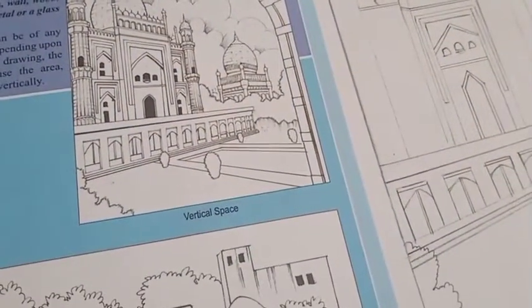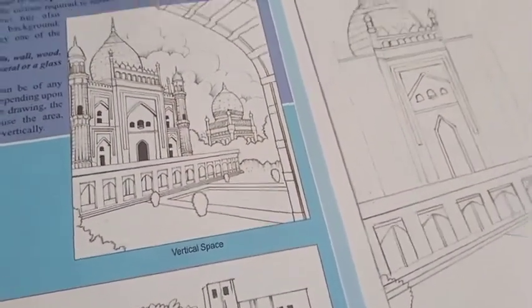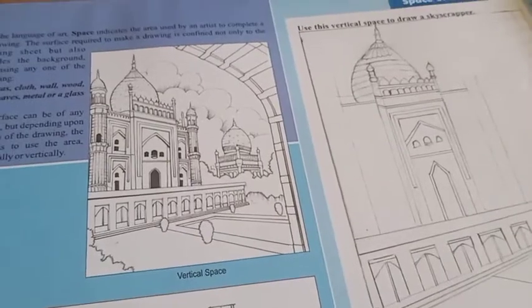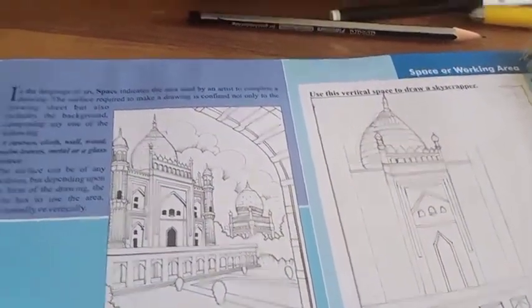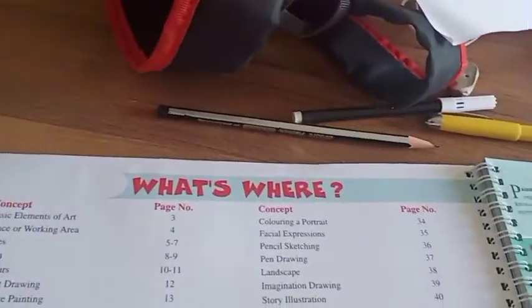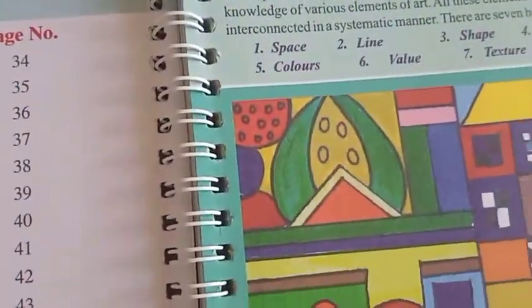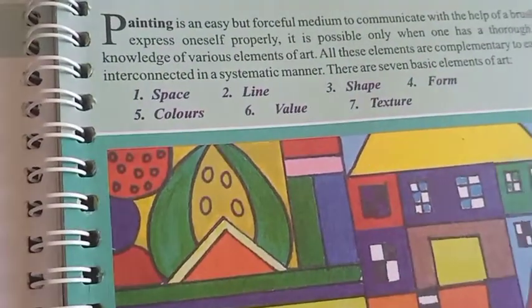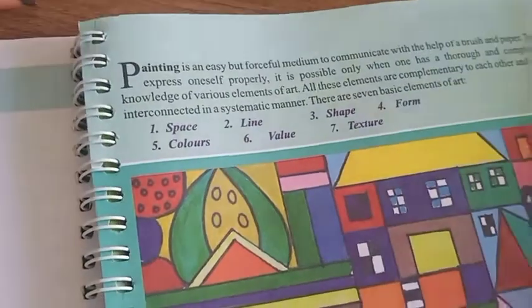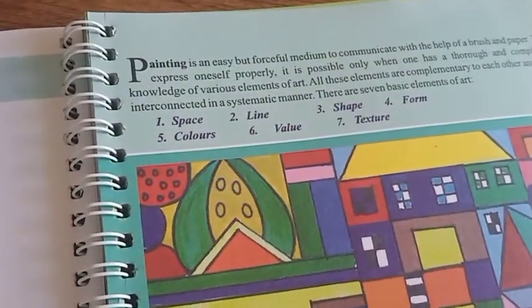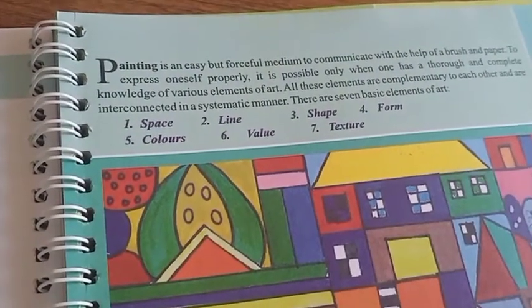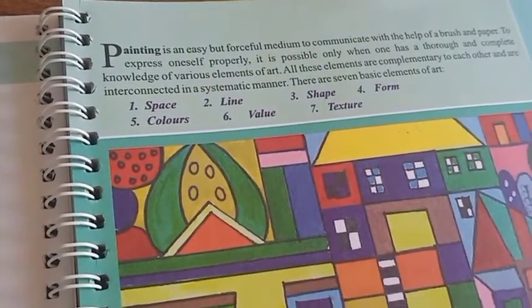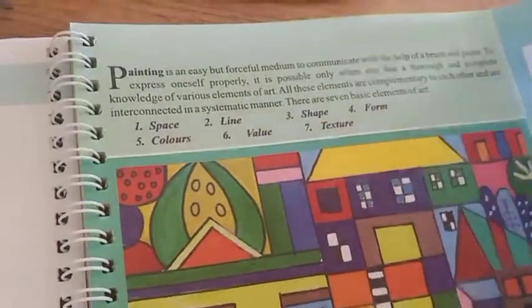Hello students, welcome to my class. Last period I taught you the elements of arts — we learned about space, line, shapes, forms, colors, value, and texture. Today we are going to draw our first drawing, which uses the element of space. Are you excited to start our new drawing?